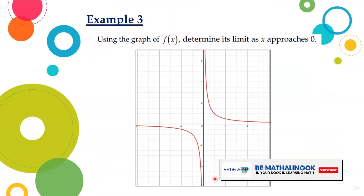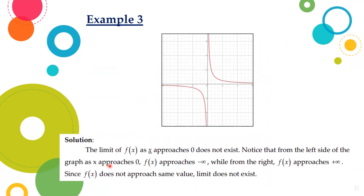Let us take another example. Using the graph of f(x), determine its limit as x approaches 0. The limit of f(x) as x approaches 0 does not exist. Why? Notice that from the left side of the graph, as x approaches 0, f(x) approaches negative infinity. While from the right, f(x) approaches positive infinity. Since f(x) does not approach the same value, the limit does not exist.